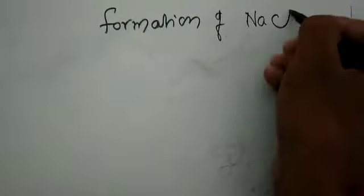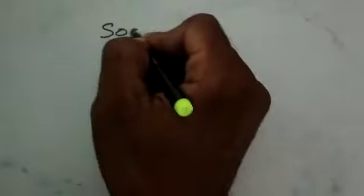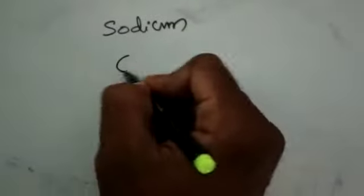Formation of sodium chloride. Sodium chloride is formed from sodium and chlorine. Sodium atomic number is 11, chlorine atomic number is 17.